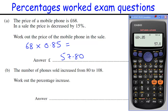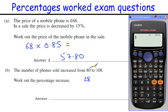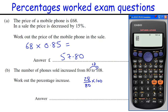The number of phones sold has increased. So what's the percentage increase? It's increased by 28, going from 80 to 108. And that's out of the original amount, 80. So that's the increase as a fraction, and as a percentage we just times that by 100. So 28 is the increase out of 80, the original amount, times that by 100, and we get 35%.